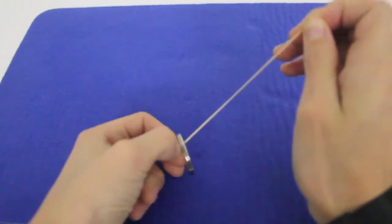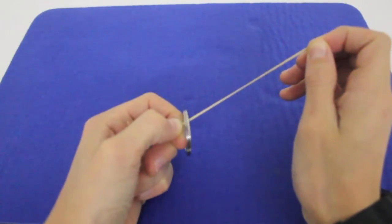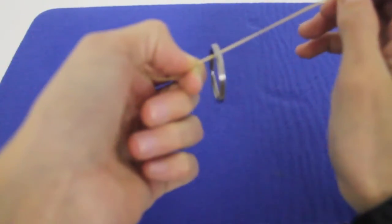And just pull like this so it's really tight. And what we're going to do is slowly release the pressure. And you'll notice that if you release the pressure, the ring starts going up. Look.